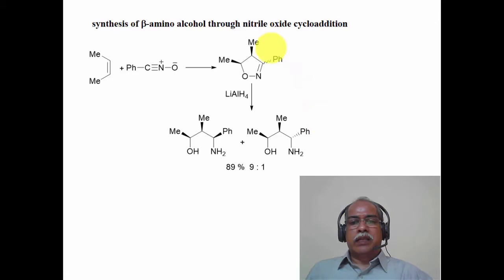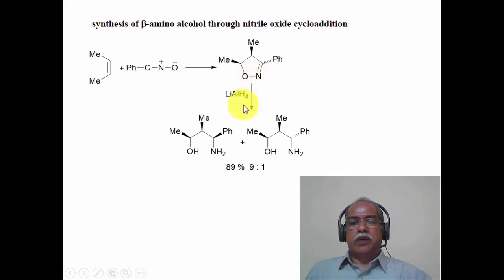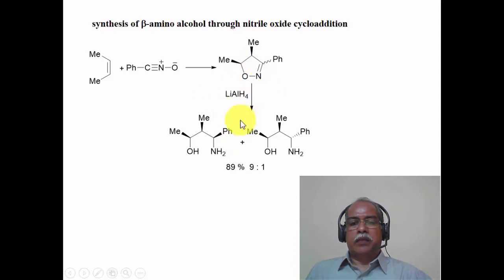The synthetic utility of the isoxazoline formed during the 1,3-dipolar cycloaddition reaction between an alkene and nitrile oxide is shown here. The nitrile oxide undergoes reaction with cis-2-butene in a stereoselective manner — the two methyl groups are cis with respect to each other and this is retained as cis in the product. It produces a diastereomeric mixture of compounds at this new stereocenter. The reductive cleavage of the nitrogen–oxygen bond produces a beta-amino alcohol in a stereoselective manner, with an initial cycloadduct stereoselectivity of about 9:1, retained during cleavage using lithium aluminum hydride.